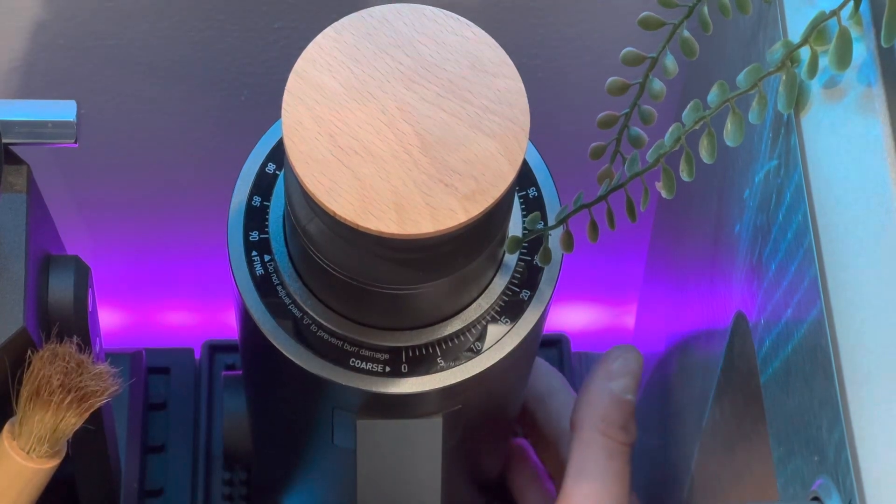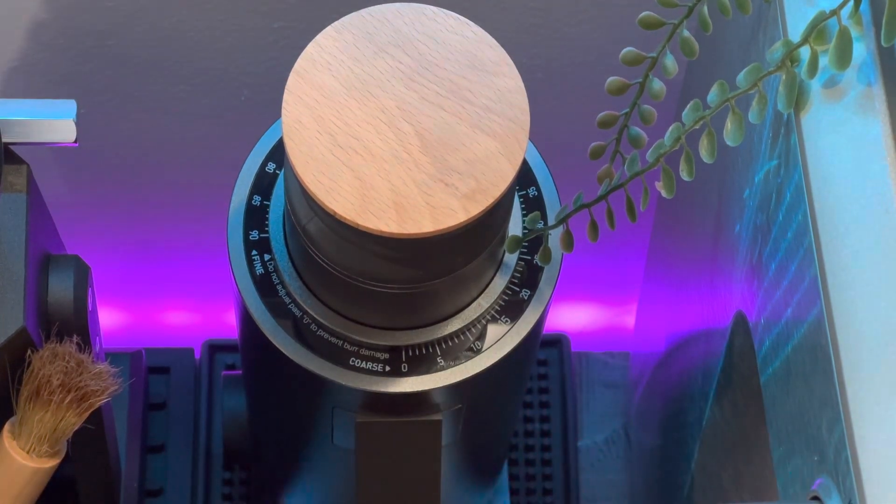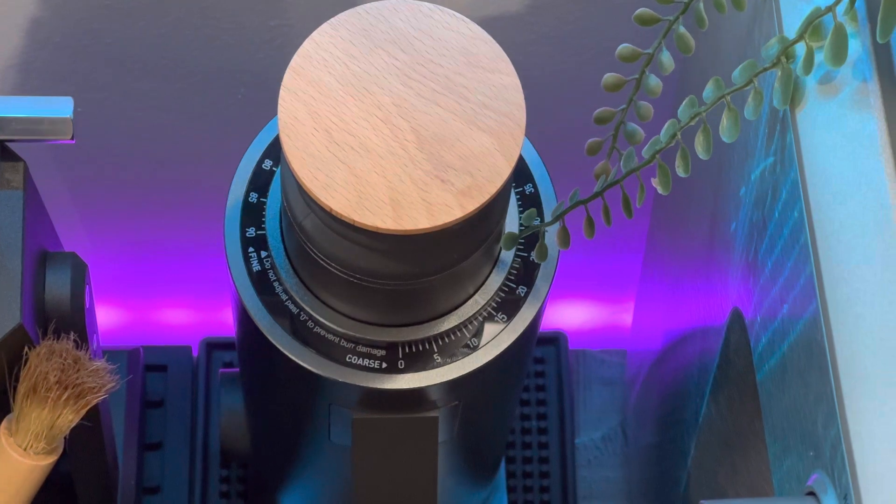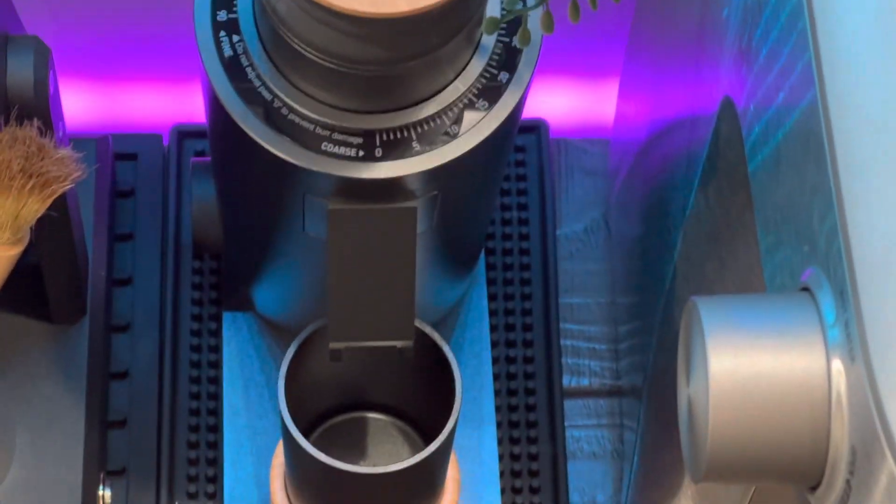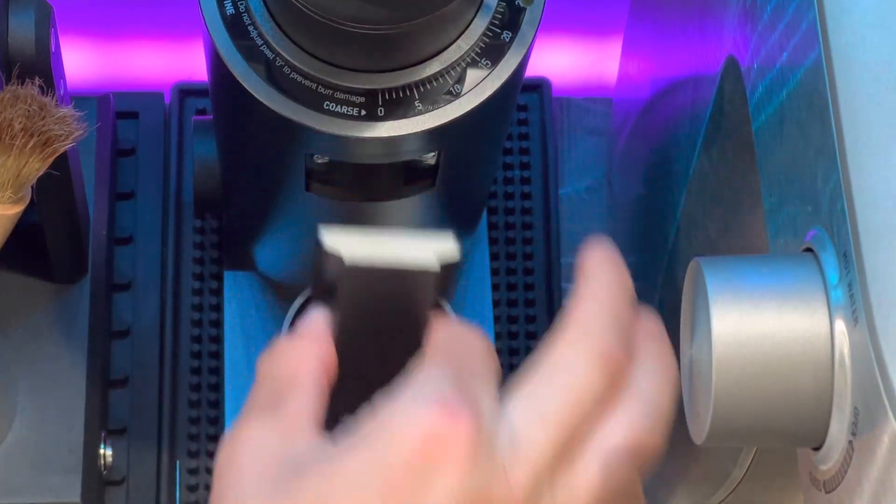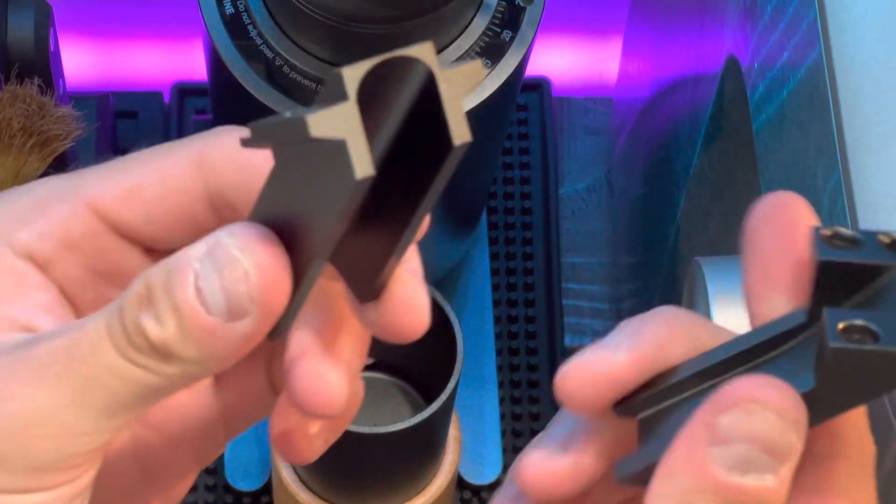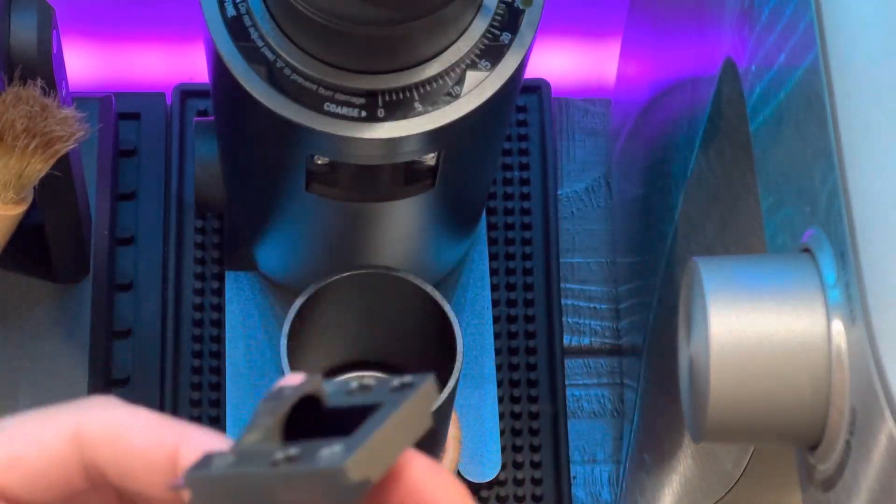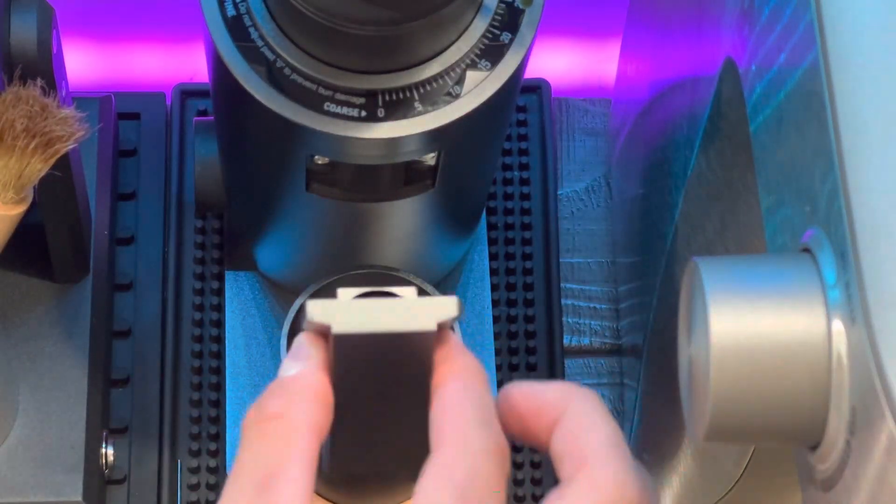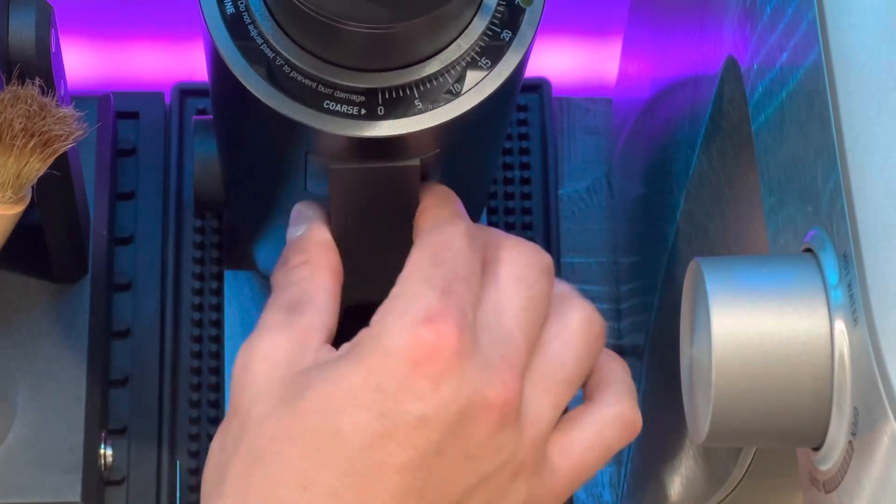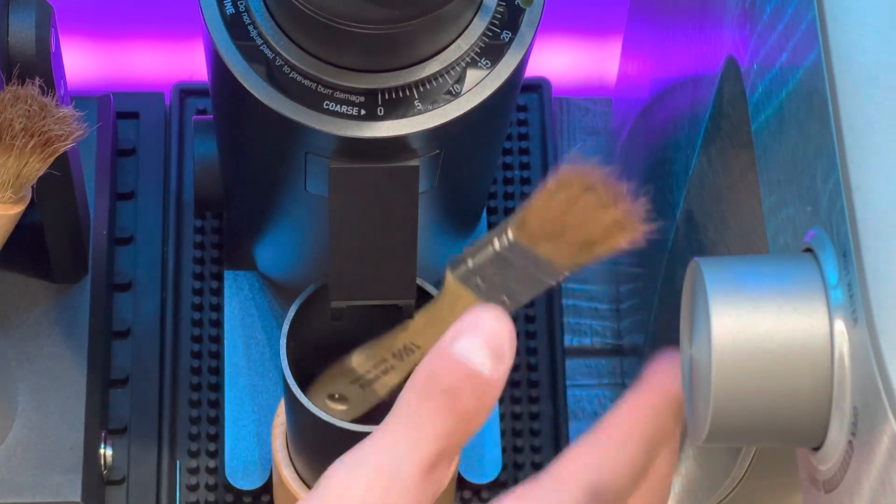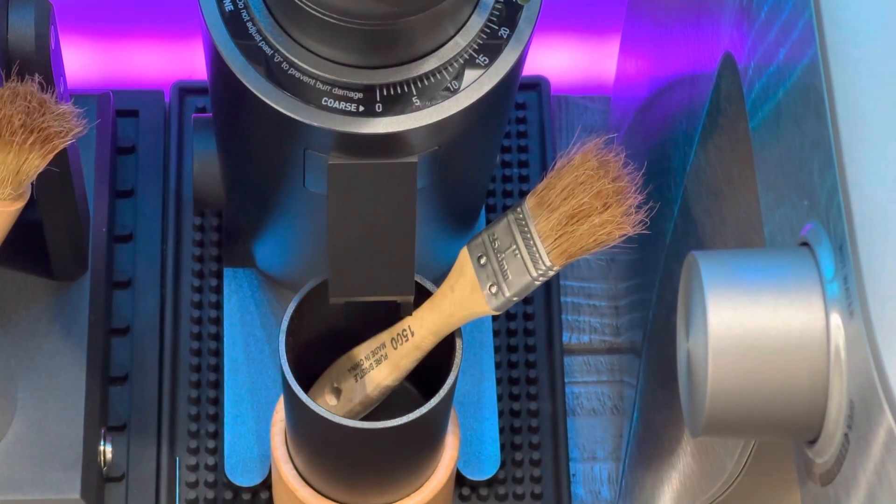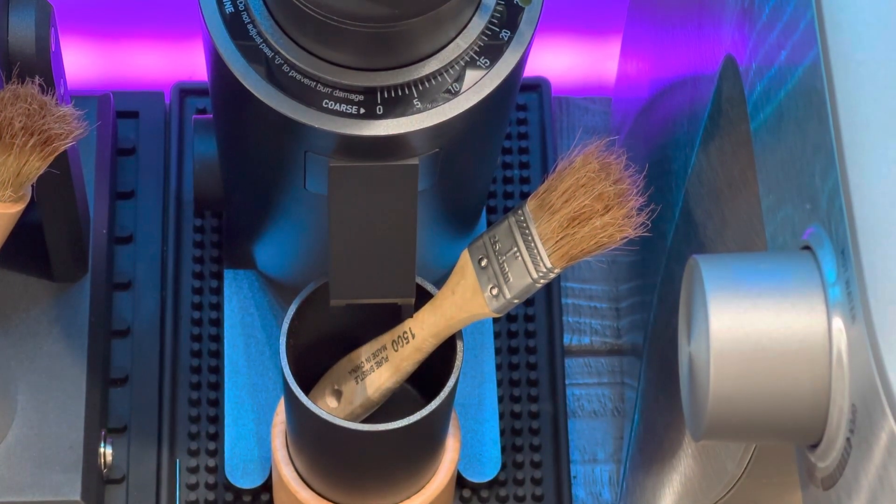Last part is you can take this chute off. The chute just pulls straight off, comes into two pieces here which are magnetic. You can put those two pieces on like so and pop that back in. So this is how you disassemble, clean, and reassemble the DF64V. Thank you so much for watching.